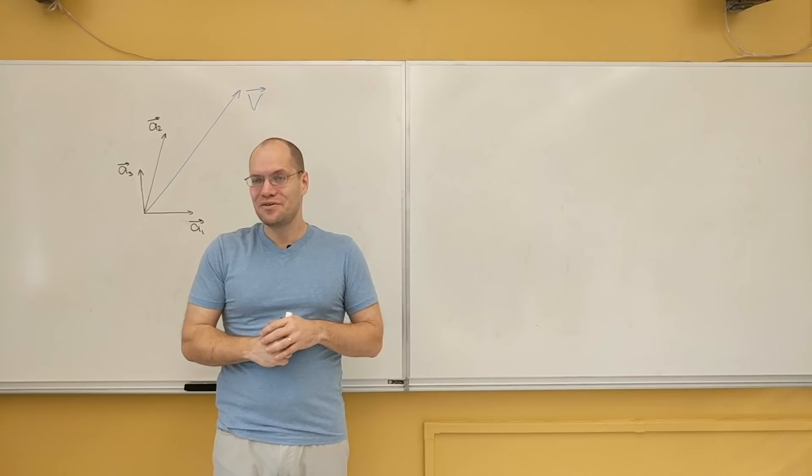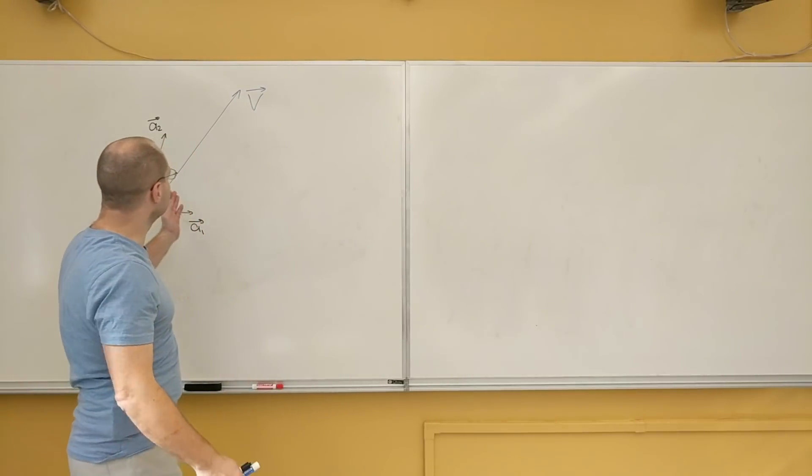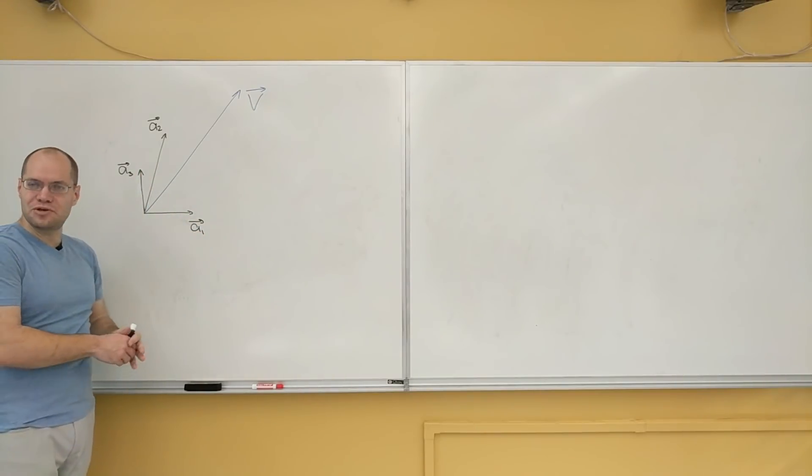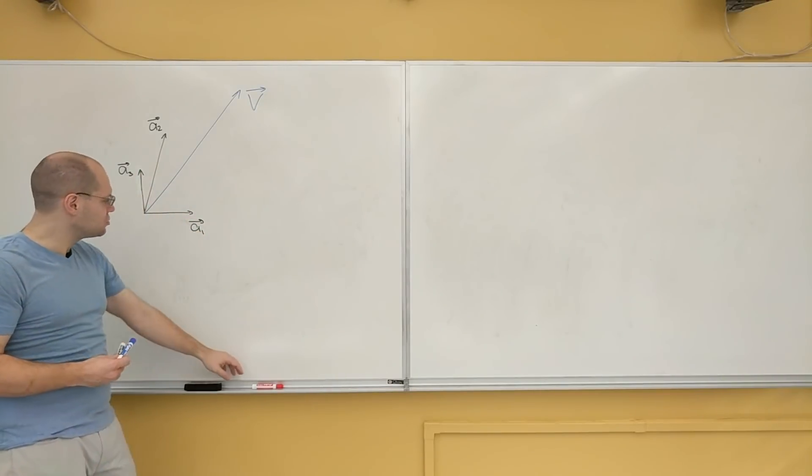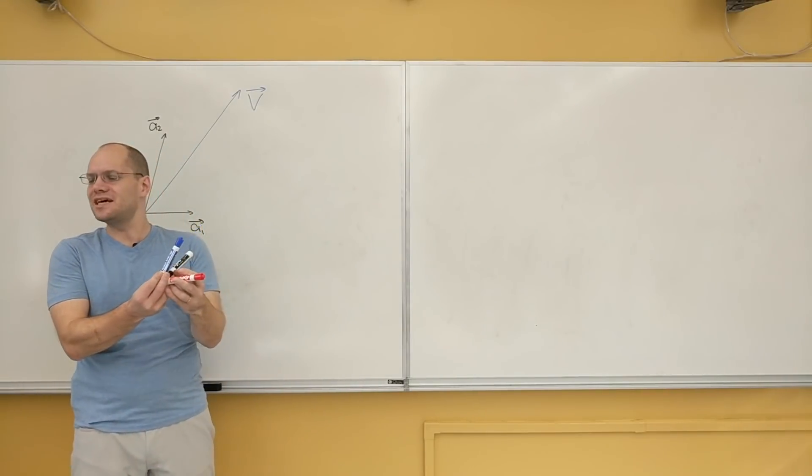Let's do another task with the help of the dot product, which is to decompose the vector v with respect to three vectors a1, a2, and a3 in three dimensions. I have a two-dimensional picture there, but the whole thing is happening in three dimensions.